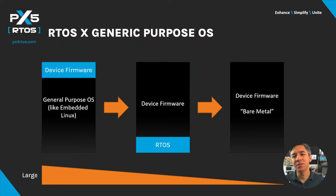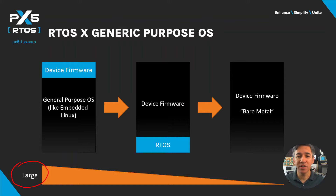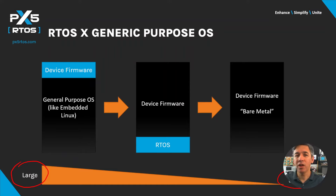Before diving into the scenarios, we need to make a clear distinction between all three possibilities. Moving from left to right, we see larger devices and larger systems both in terms of processing power and memory, going all the way to the right where we have smaller devices and smaller scale capabilities.